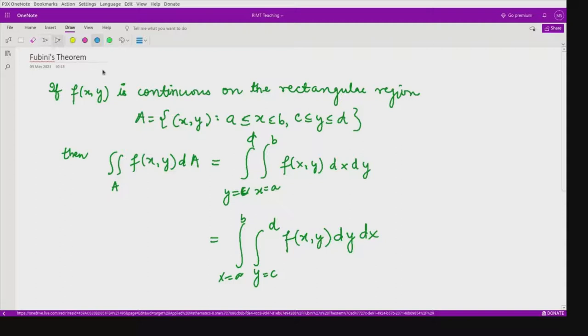This is what we are doing. This theorem says that these two conditions are important here: the function should be continuous and the given region should be a rectangular region. If these two things are done, then even if you interchange the integration limits the answer would be the same. That means the double integration would be same.